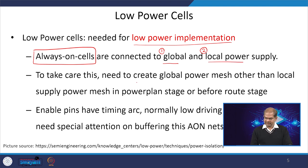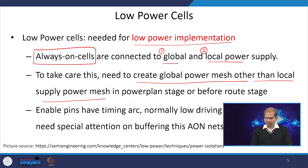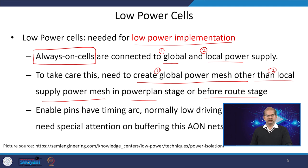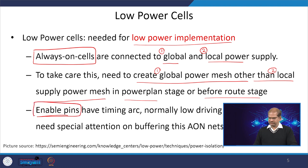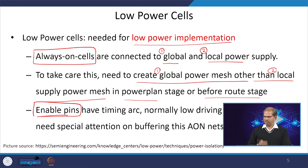We need to create a global power mesh rather than the local power mesh in the power planning stage before the routing stage. Power planning should be done before the routing of the signal nets — we have to create the global power grid and the local power grid before the routing stage. There are enable pins inside the always-on block used to determine whether the supply should be connected to the global or the local power supply.